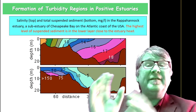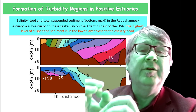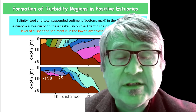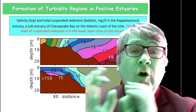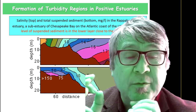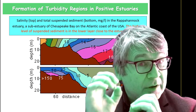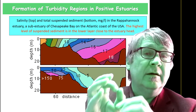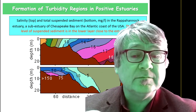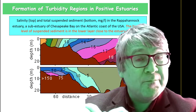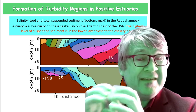These turbidity regions in general are important nutrient sources for the ecology and for the food chains in estuaries, because of the organic particulate matter. That's a very important message.